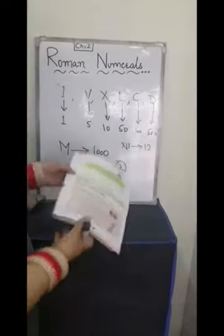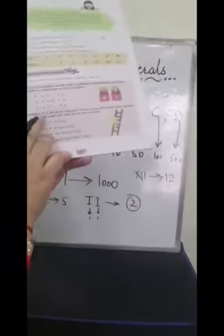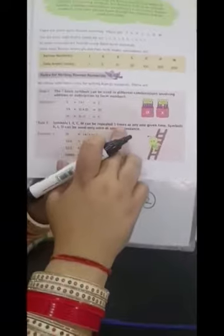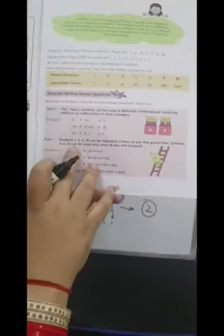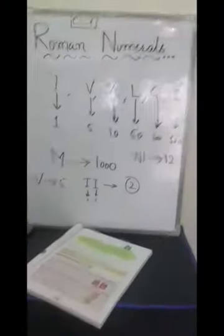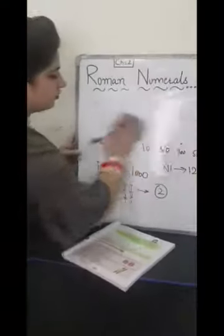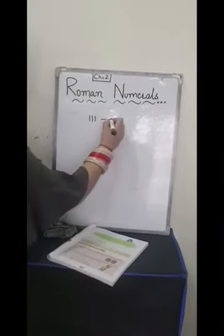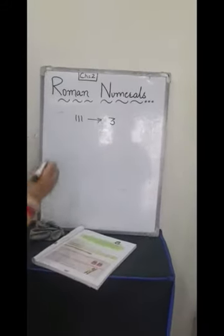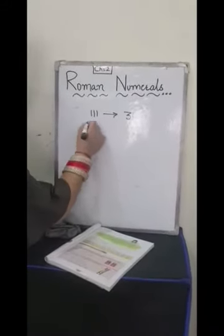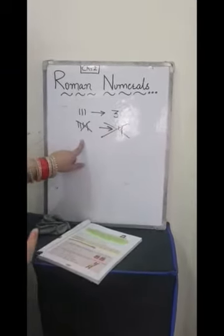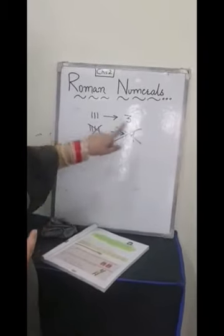Now 2nd rule: symbol I, X, C, M can be repeated 3 times at any one given time. Symbols V, L, D can never be repeated. See, I, I, I means 3. But if I have to write 4, I can't write I four times. This doesn't mean 4. Why? Because you can't repeat any symbol more than 3 times.